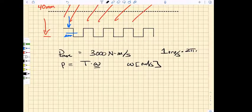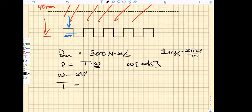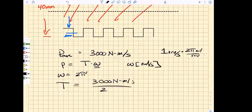To get radians per second, I know there are 2π radians per revolution, so omega equals 2π. This means my torque equals my input power, 3000 newton-meters per second, divided by 2π. If you carry out that calculation, you find that the torque equals 477 newton-meters.